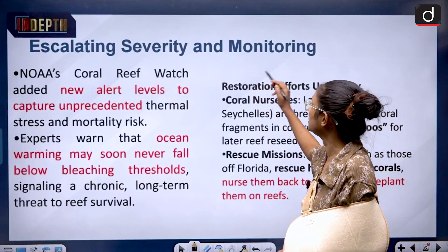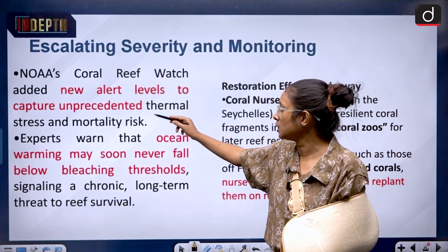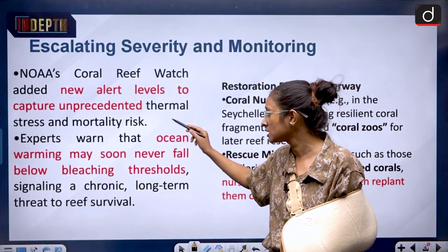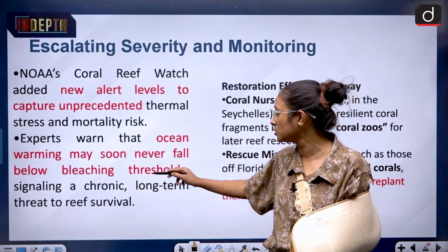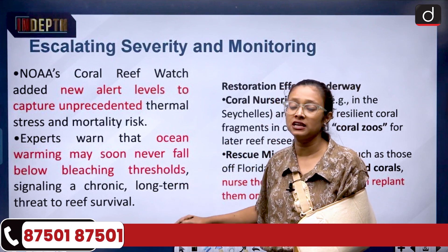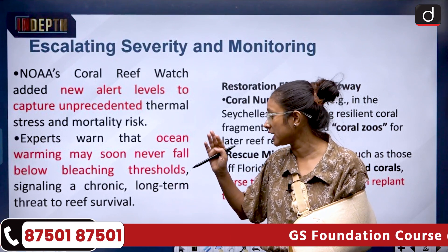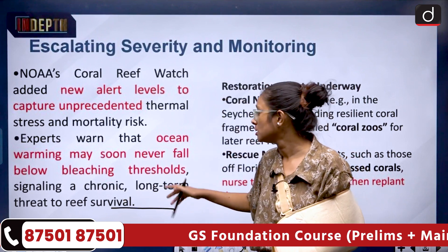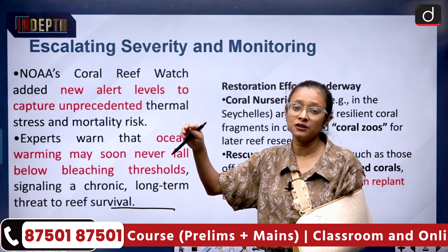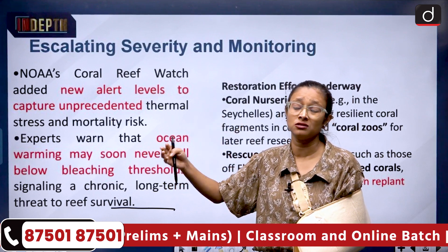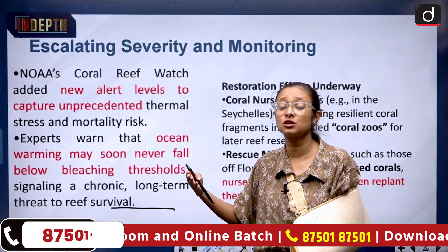Escalating severity and monitoring: NOAA's Coral Reef Watch added new alert levels to capture unprecedented thermal stress and mortality risk. Experts warned that ocean warming may soon never fall below the bleaching threshold, signalling a chronic, long-term threat to reef survival. There is a threshold, but if we are crossing even that threshold this can cause chronic bleaching, which is very problematic.